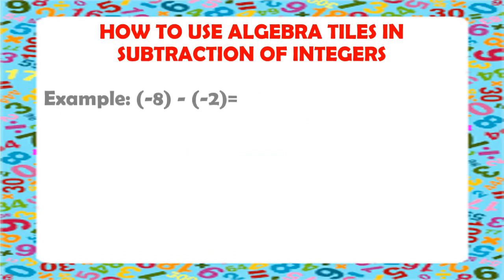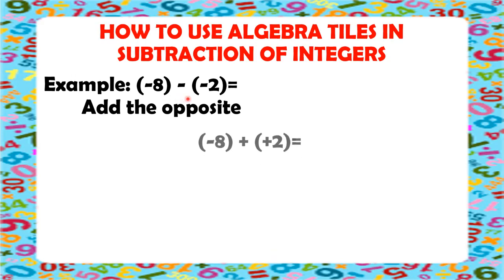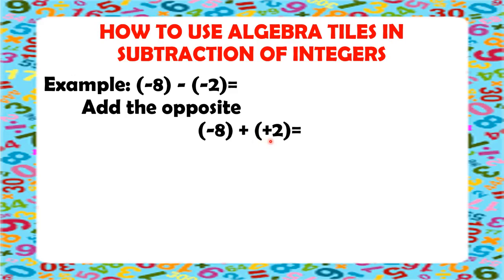Now, let's have another example: negative 8 minus negative 2. We are going to add the opposite. So, just copy down the first integer as is, which is negative 8. And instead of putting the subtraction sign, we're going to put the addition sign. And add the opposite of negative 2, which is positive 2. So, our new equation is negative 8 plus positive 2.